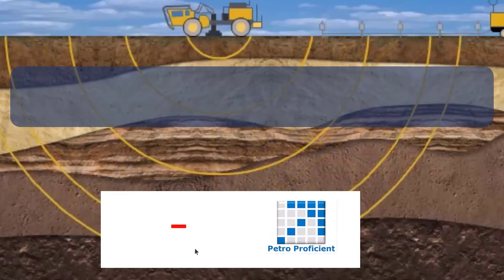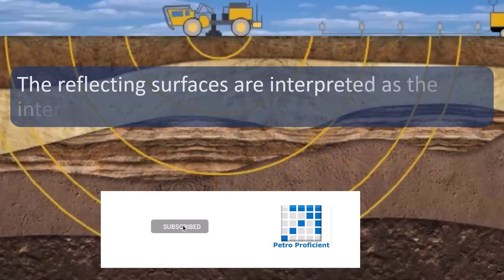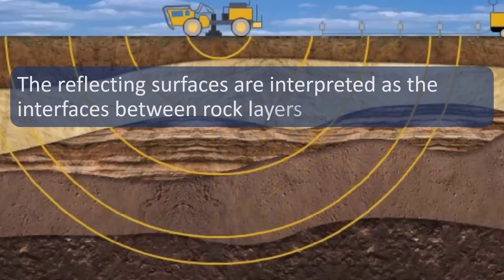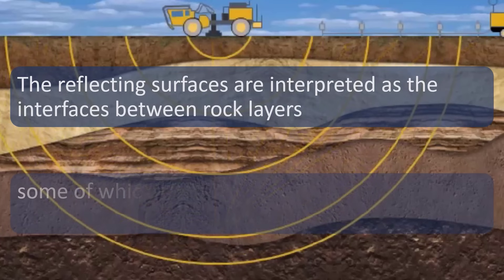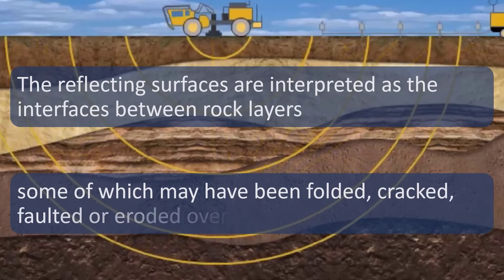The reflecting surfaces are interpreted as the interfaces between rock layers, some of which may have been folded, cracked, faulted or eroded over geologic time.